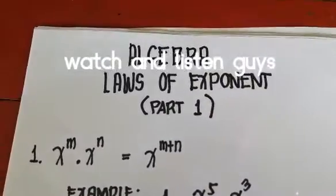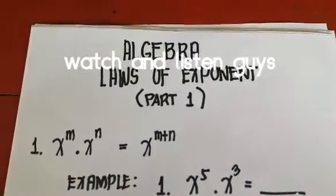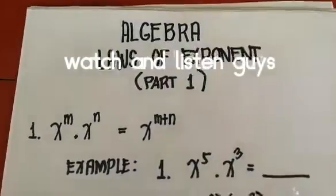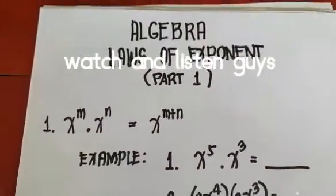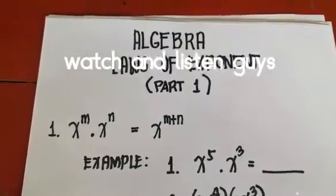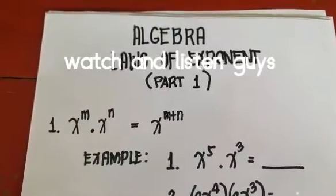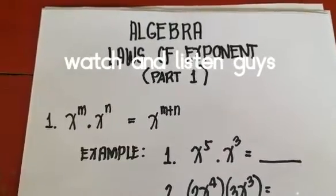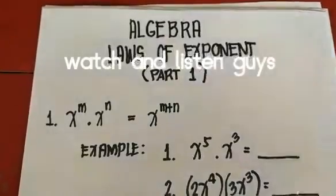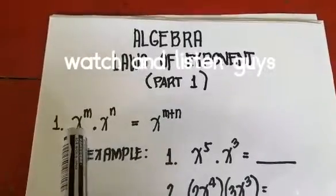Our lesson for today is algebra with the laws of exponents — this is Part 1 because there is a Part 2. Number one: if x raised to m multiplied by x raised to n is equal to x raised to m plus n. So if we're multiplying exponents with the same base, the base stays the same.